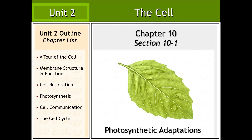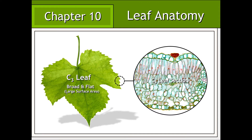In today's lecture, we'll be discussing the structures associated with leaf anatomy. The leaf represents one of the major adaptations of the plant body for the purpose of photosynthesis. A feature characteristic of most leaves, which makes it well adapted for photosynthesis, is its broad flat shape, which maximizes its surface area for the collection of sunlight. The particular type of leaf anatomy discussed concerns C3 plants, named after the manner in which they utilize carbon dioxide to make sugars.